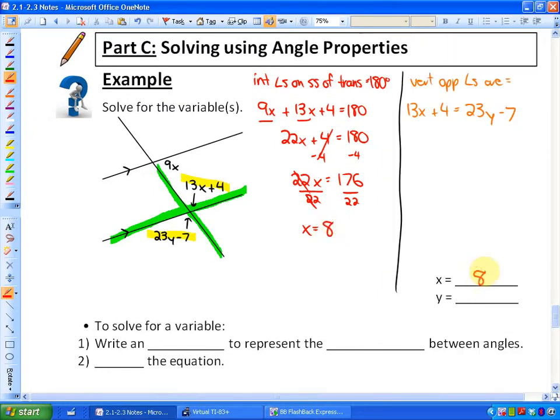Now we know that x is 8. That will be useful because x is 8 irregardless of the equation now. So in this second equation, we now know that x is 8. If I substitute it in, we will have 13 times 8 plus 4 equals 23y minus 7. And at this point in time we can now solve for the variable y.